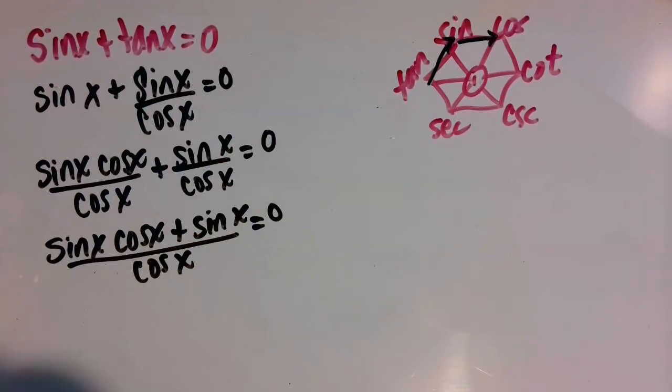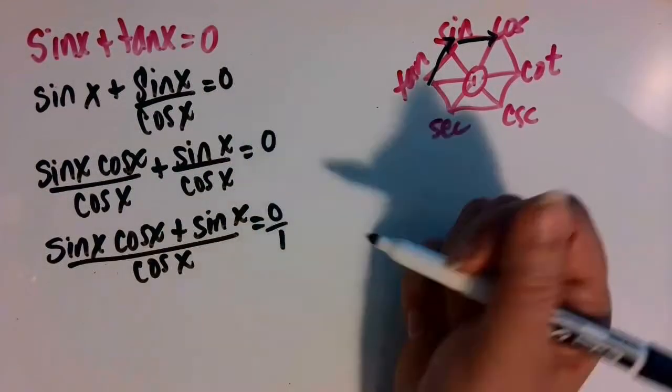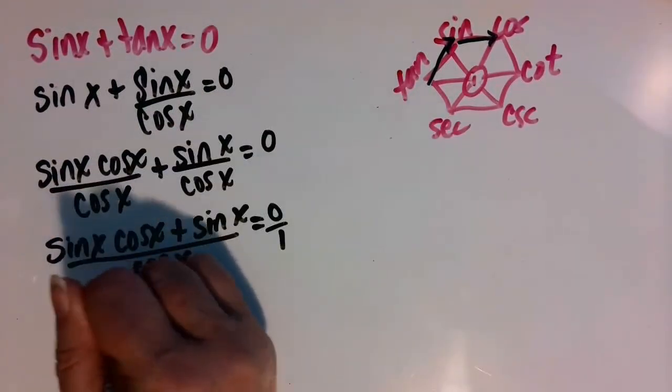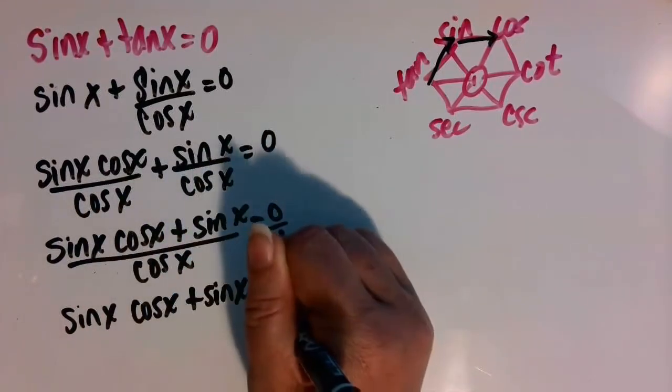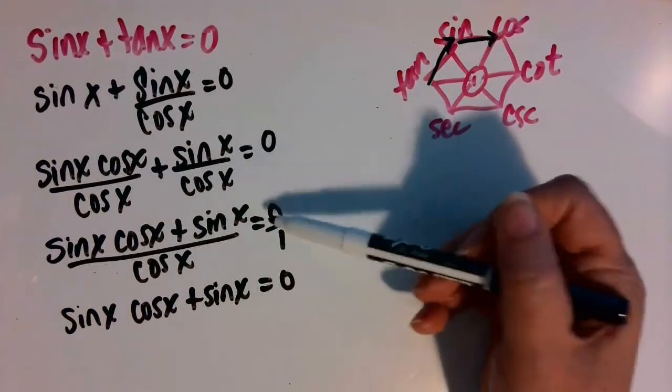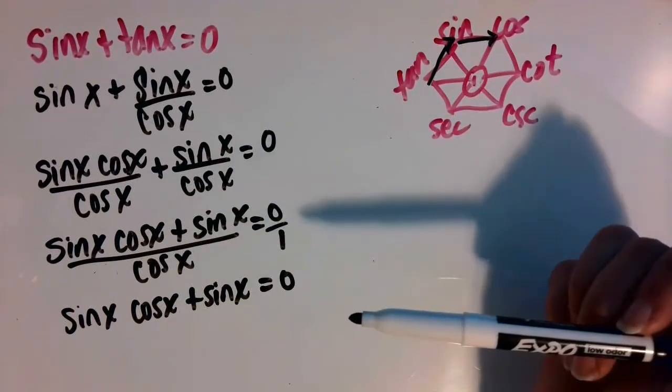And then when we cross multiply, sine of x cosine of x plus sine of x is equal to zero, because zero times cosine of x is zero.